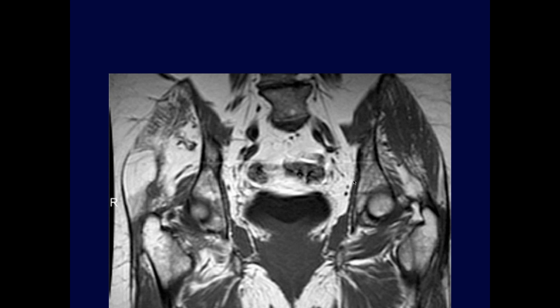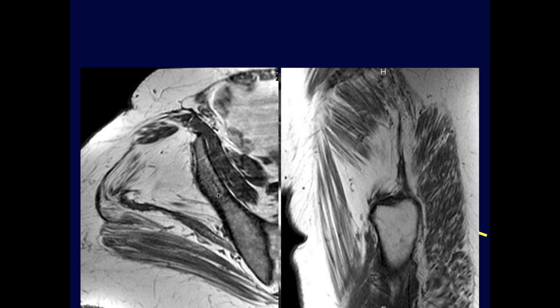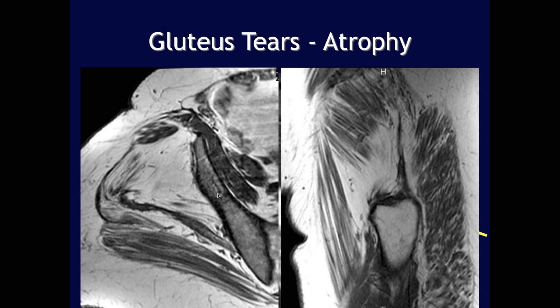Significant atrophy of the right gluteal musculature is noted. There is no good attachment of the gluteus medius, indicating a tear, and some partial tearing is also present on the left side. This represents severe bilateral asymmetric muscle atrophy due to chronic tearing of the gluteus medius tendons with subsequent disuse atrophy.